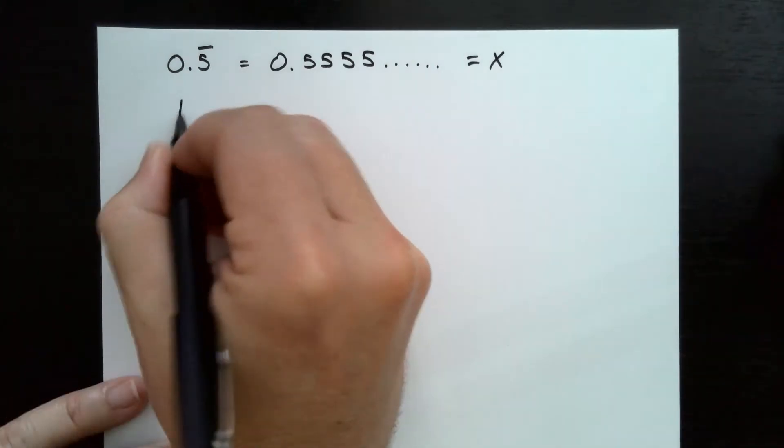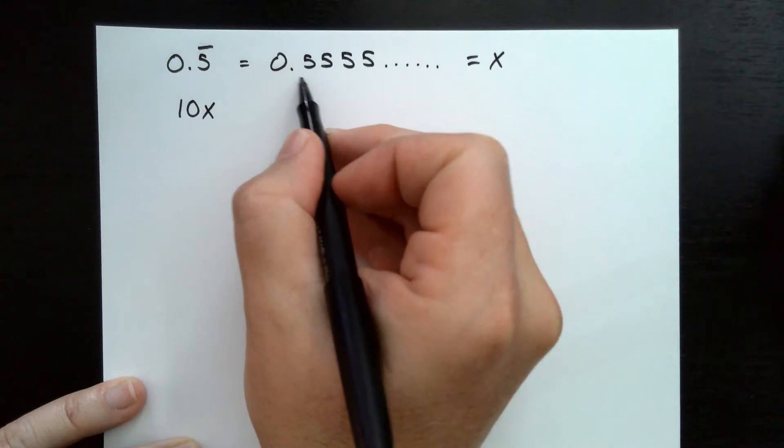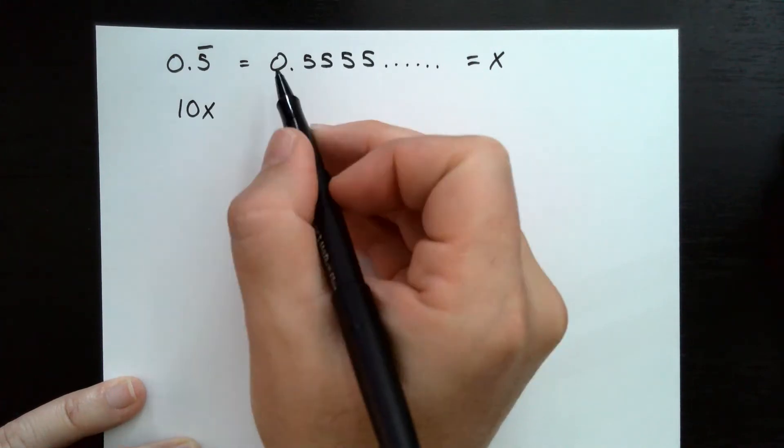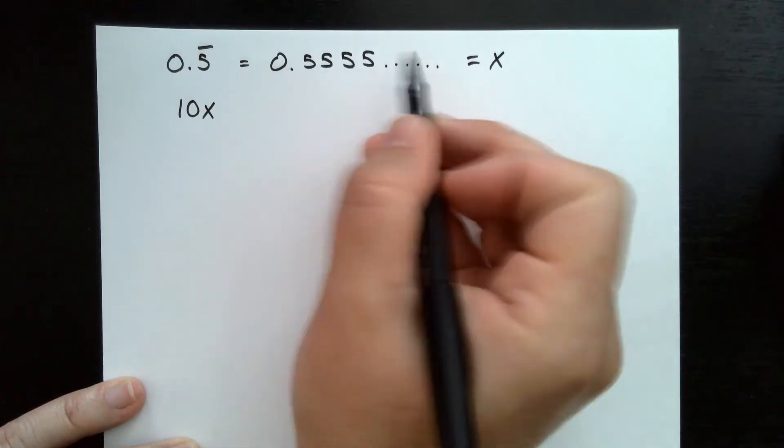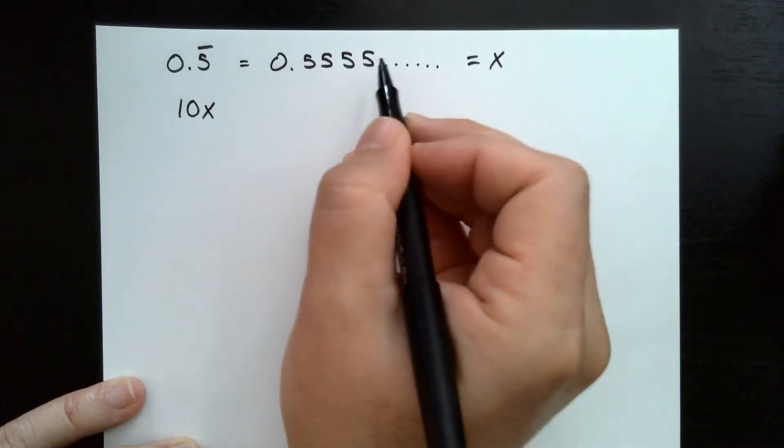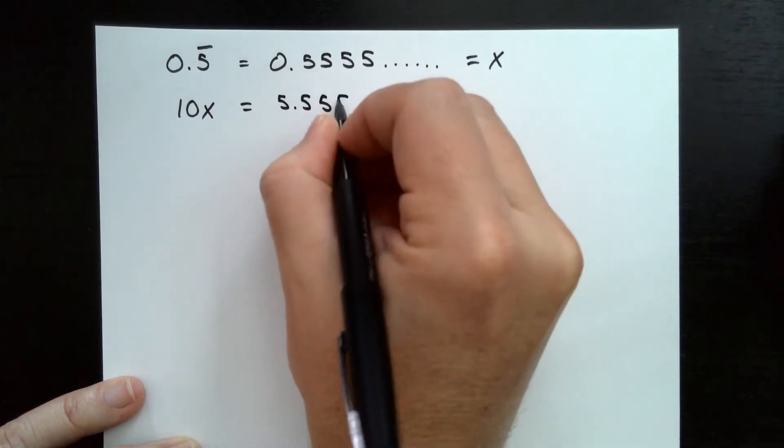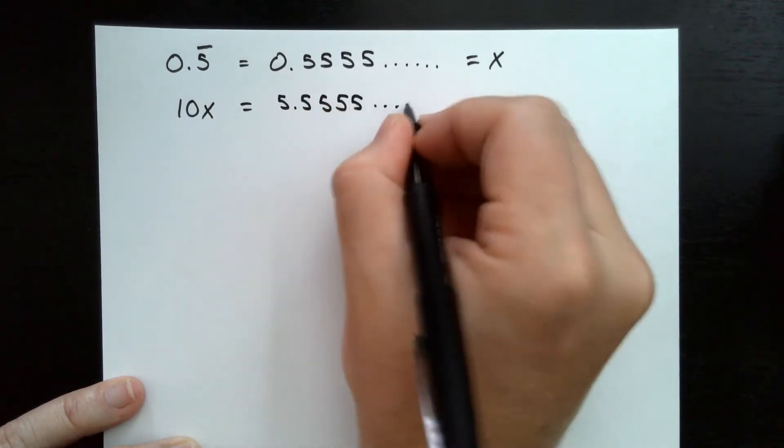So what would happen if I multiplied x by 10? Well, it would move the decimal place over one time. So instead of 0.55555 repeating, it would be 5.5555 repeating. So 10x is equal to 5.5555 repeating.